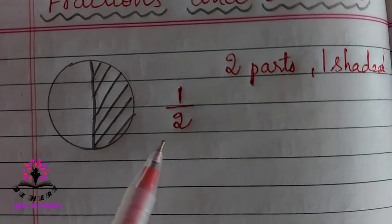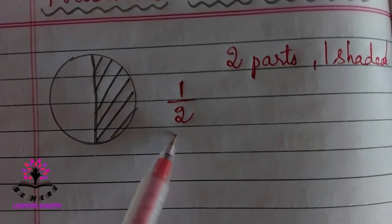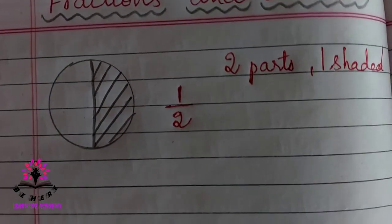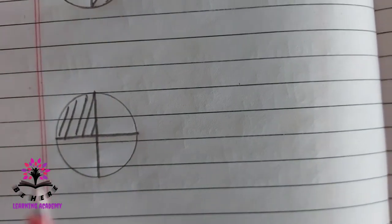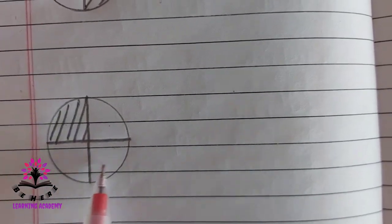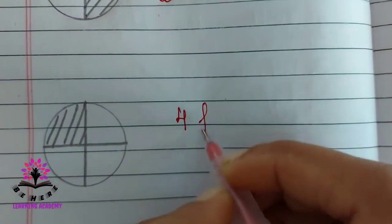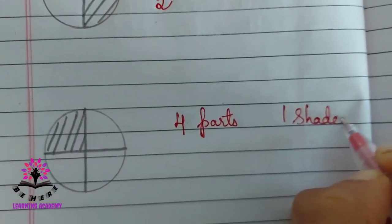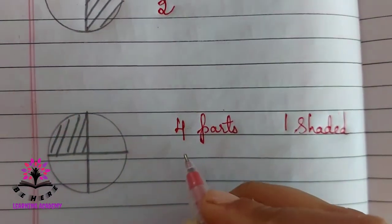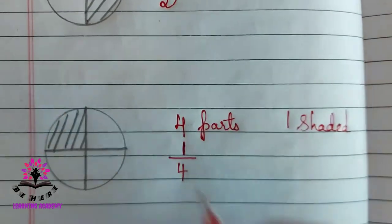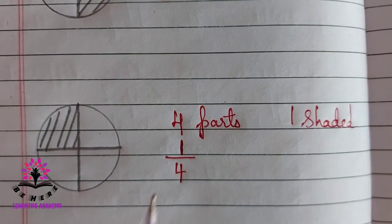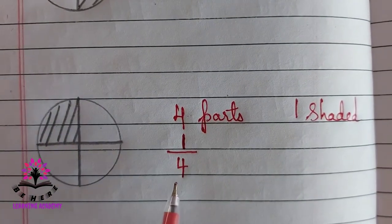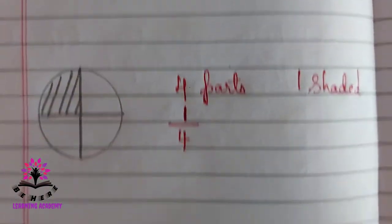This is read as one divided by two, or one by two. Now see the second one — the circle is divided by two lines into four parts. One part is shaded. So you can write it as one by four, which we read as one divided by four.